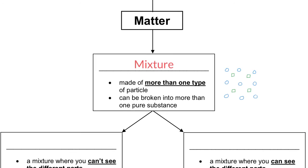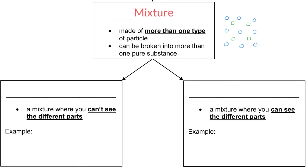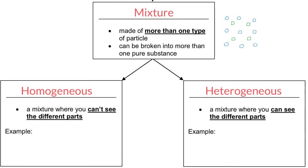Now let's take a look at mixtures. The distinction between types of mixtures is whether you can see the different parts or not. When you can't see the different parts, that's called homogeneous. When you can see the different parts, that's called heterogeneous. The prefix homo means the same, and the prefix hetero means different. So a homogeneous mixture is the same throughout, and a heterogeneous mixture is different throughout.